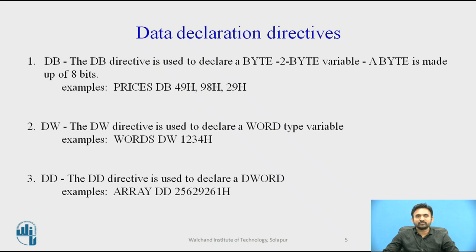In data declaration, the first one is DB. The DB directive is used to declare a byte; a byte is made up of 8 bits. For example, if there is a variable or declaration 'price' of data type DB with values 49, 98, and 29, we declare an array of 3 bytes named 'price' and initialize them with the specified values.